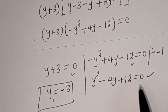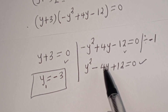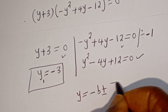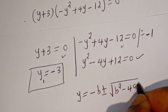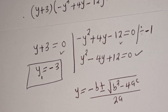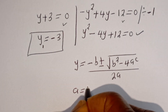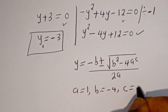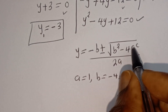This is a quadratic equation which can be solved using the quadratic formula: y equals minus b plus or minus square root of b squared minus 4ac, divided by 2a. From this equation, a equals 1, b equals minus 4, c equals 12.